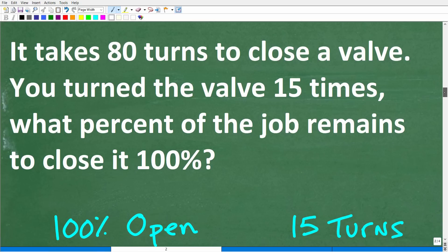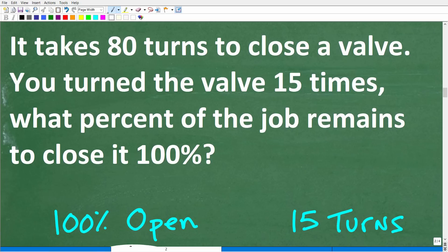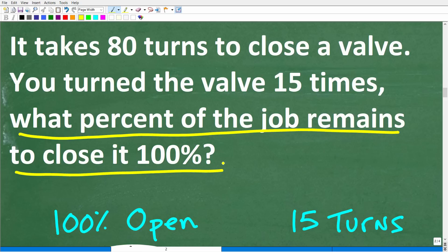All right, so we have our model. And let's just kind of double check here that we have the right question in mind. So what percent of the job remains to close this valve 100%? Well, we already started to close the valve. We turned this valve 15 times. And now we know how many more turns we have to complete in order to shut the valve 100%. So we kind of have to start thinking about what is the actual math question here.